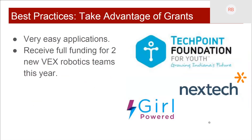Take advantage of grants — this is the best way to get computer science or robotics started at your school. I've utilized three grant programs throughout the last year: Tech Point, Girl Power, and Next Tech. They funded two full robotics teams for VEX this year alone and have given me a lot of money to do some really incredible things. If you're trying to start a robotics team or any kind of computer science program, I highly encourage you to check these out.